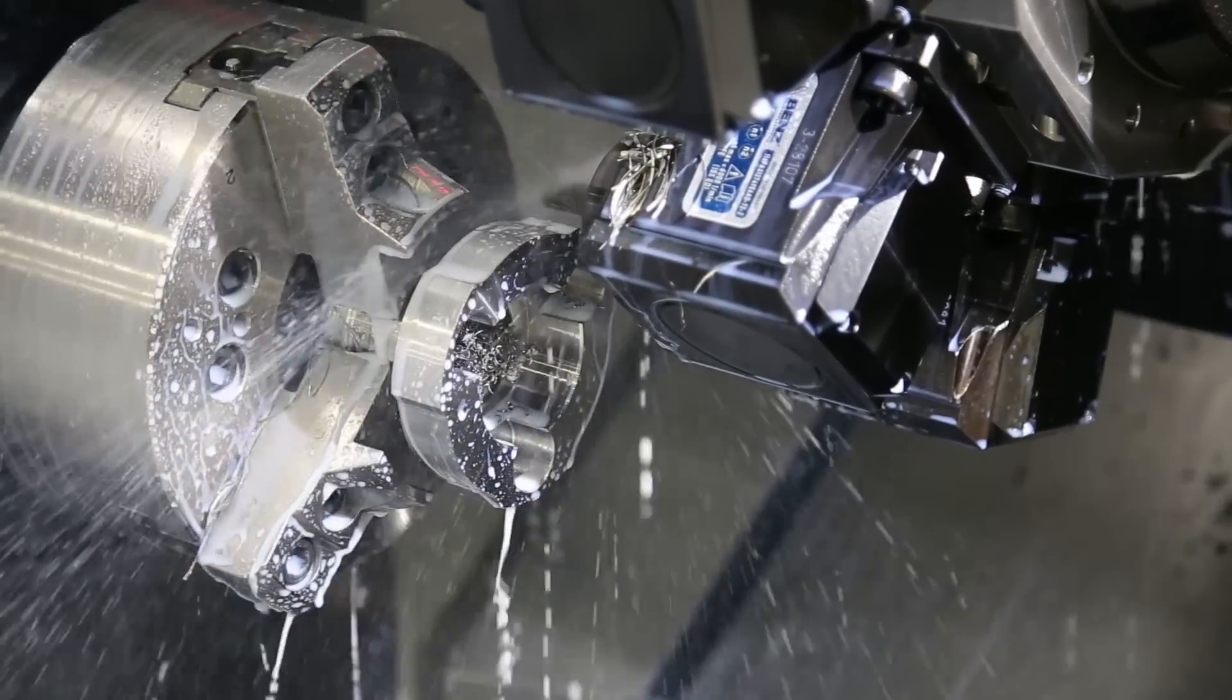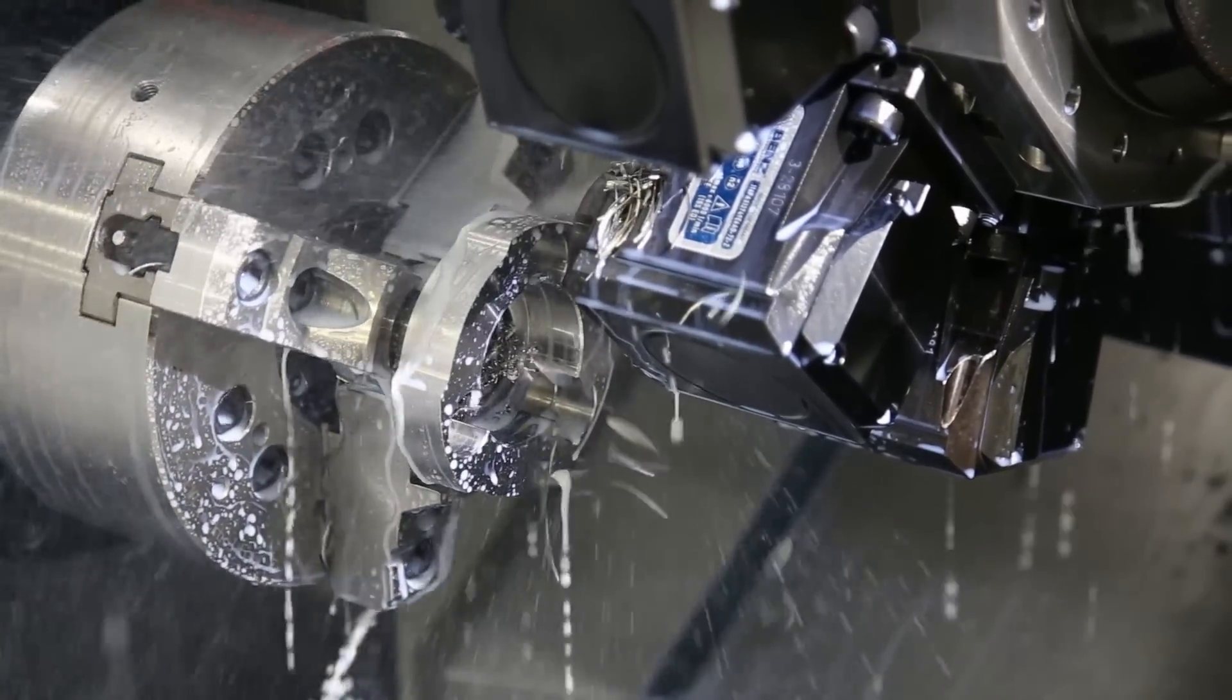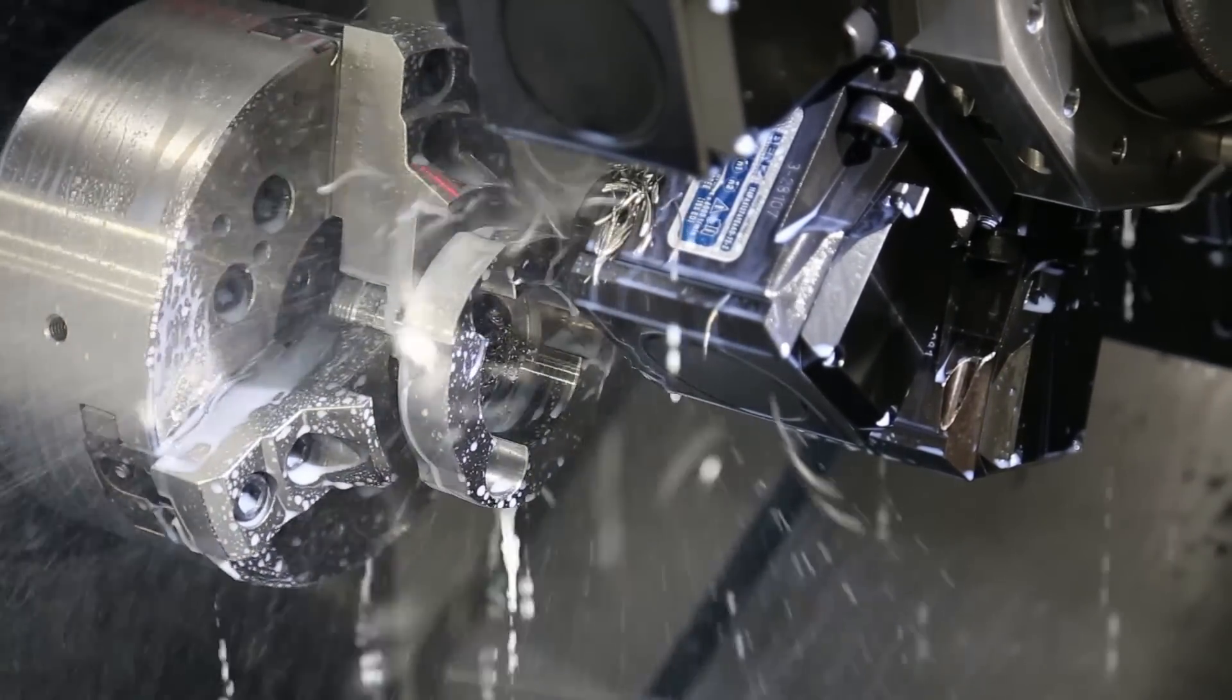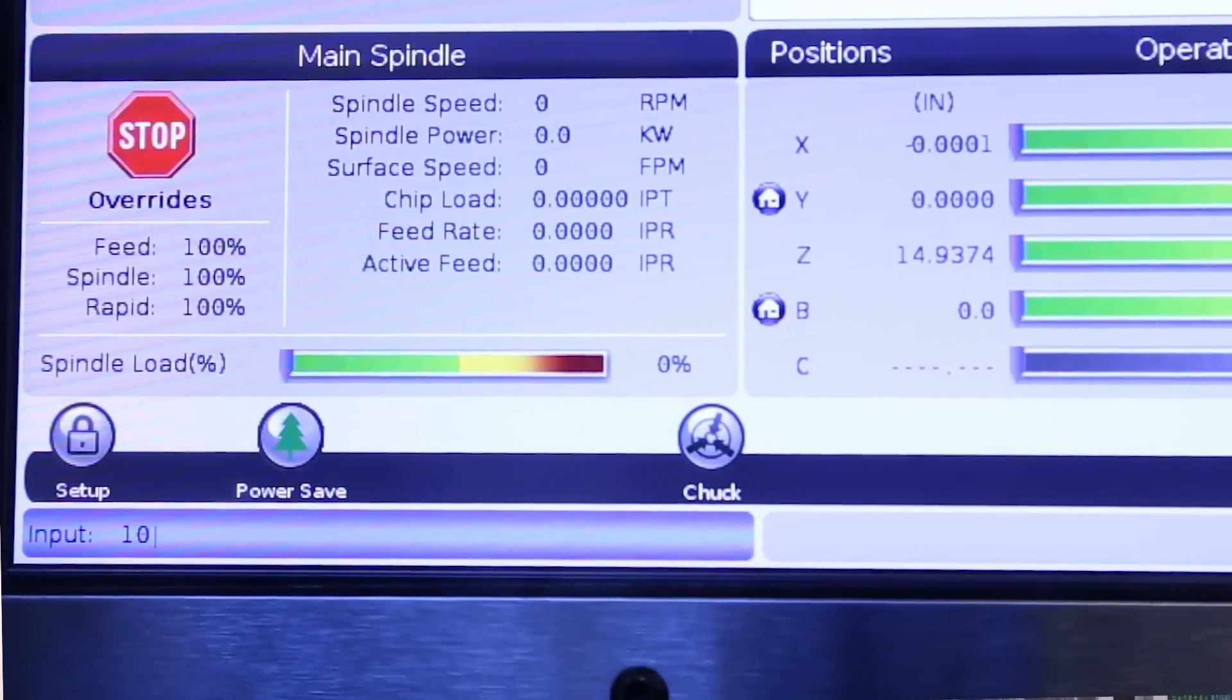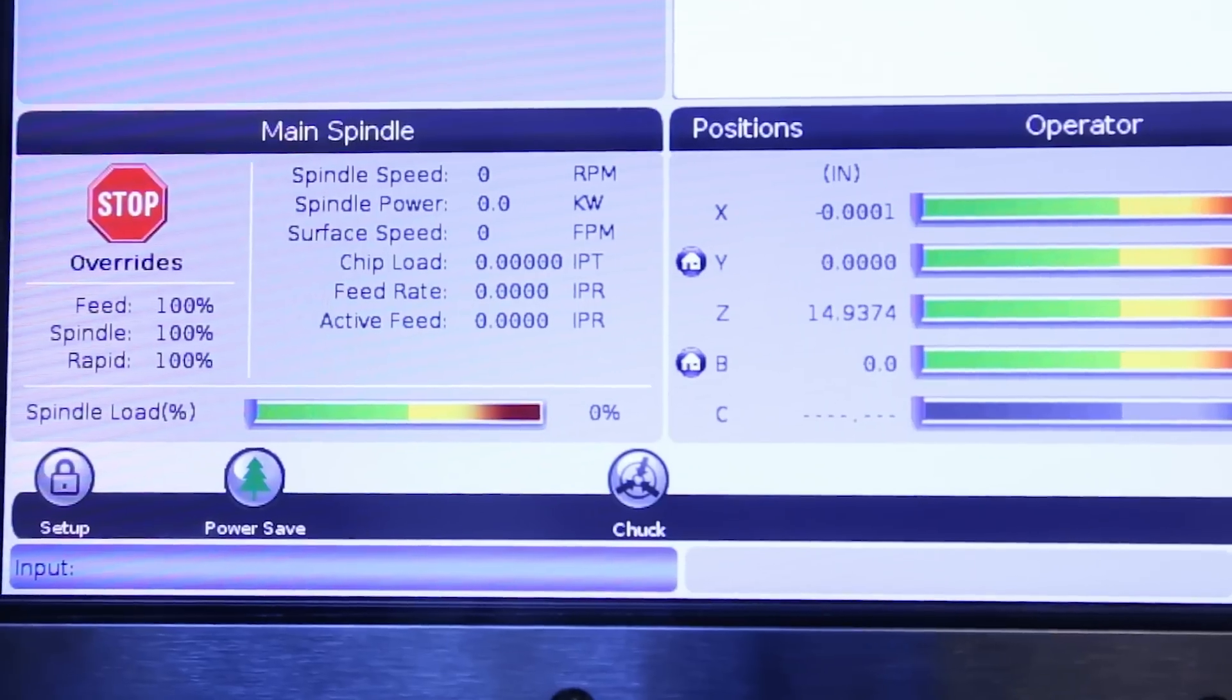This is especially important because the control doesn't compensate for changes in the diameter when using the C-axis. Before you start your job, make sure you change setting 102 to match your stock.